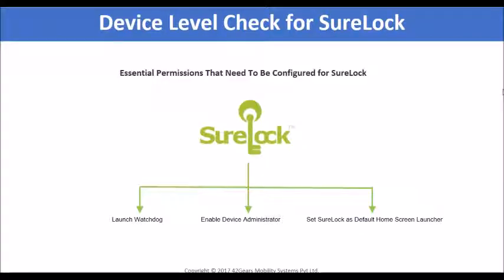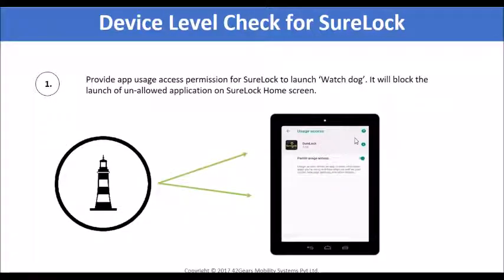The first and foremost point is to grant all essential Android permissions to Sherlock necessary for initiating any lockdown or secure deployment. In most devices, granting these permissions is a manual procedure. But if you're using an enterprise agent signed with the platform certificate by your OEM, you can automate this instead of doing them manually. The first configuration to keep in mind is to grant app usage access to Sherlock. You will be prompted to grant this permission on first launch.